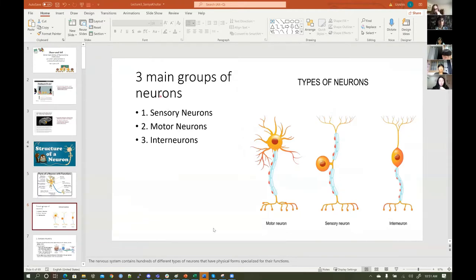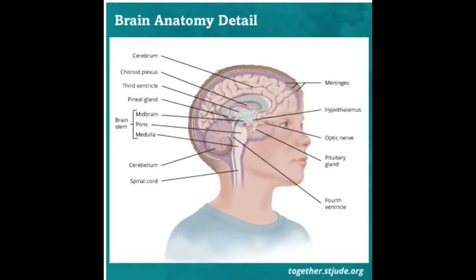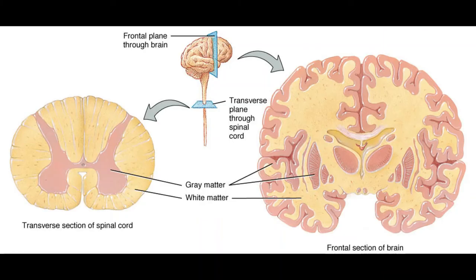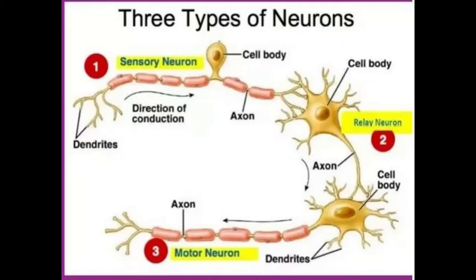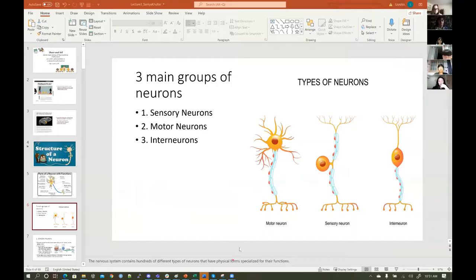The nervous system contains hundreds of different types of neurons that have physical forms specialized for their functions. The three main types of neurons we're going to focus on are sensory neurons, motor neurons, and interneurons.